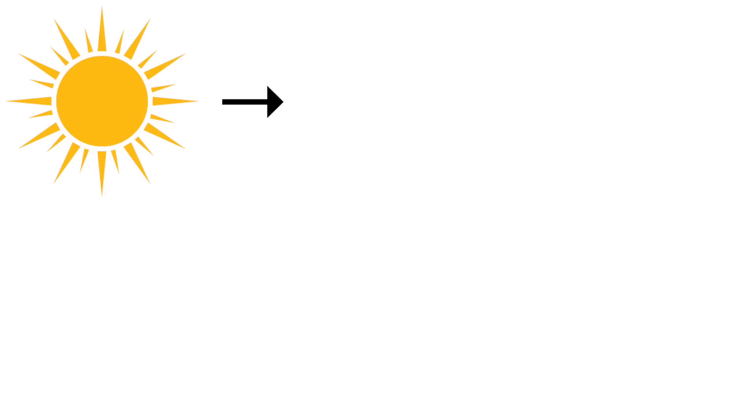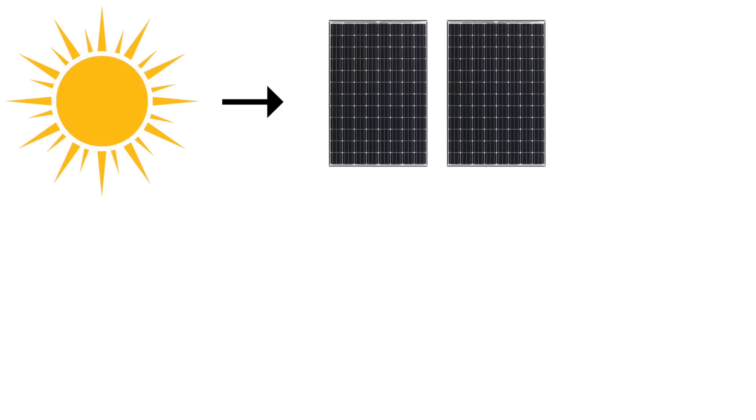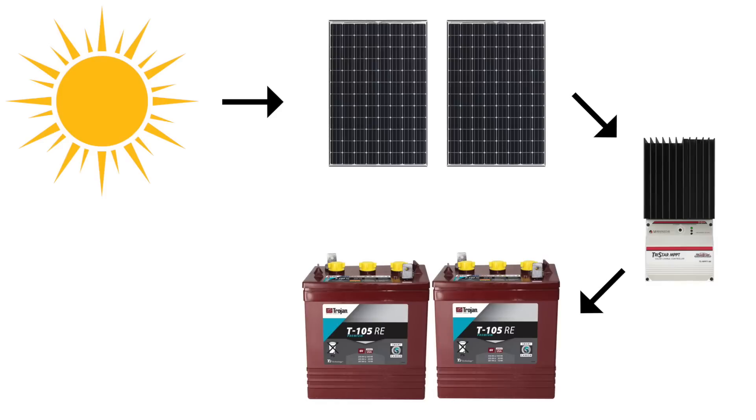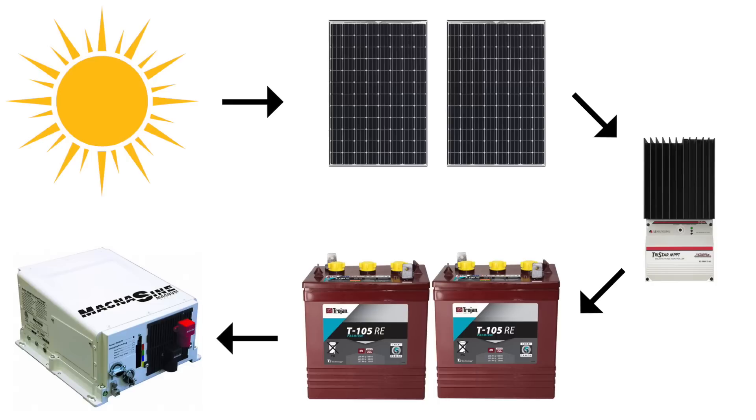Hello everybody, Michael here with Do It Justice, and welcome to the next video in our DIY solar power series. Today is an exciting day because we're covering the last major component of the solar power system. In the previous three videos we've talked about the solar panels, the battery bank, the charge controller, and now we're going to cover what happens after the battery bank — and that is the solar inverter.